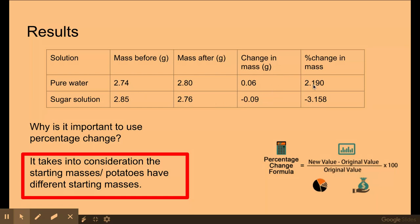It's also important that I calculate a percentage change in mass using this formula here. The way I interpret this is the change over the original times 100. So my change divided by my original, and then I times by 100 to get 2.190. So here are my percentage changes in mass.